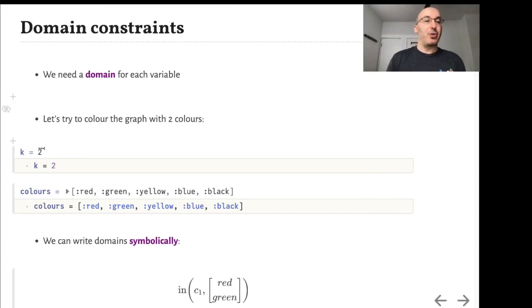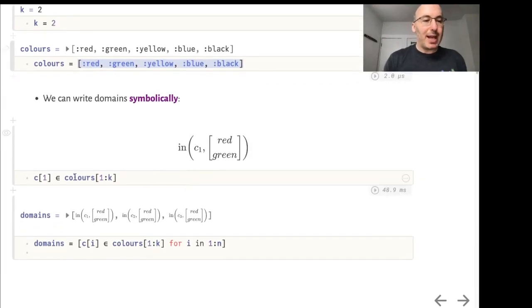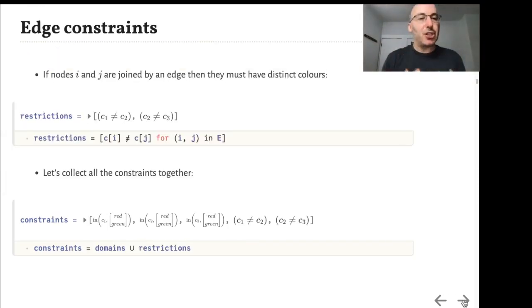Let's try to color the graph with two colors. k is the number of colors and here is a list of colors to choose from. We can write domains symbolically using the symbolics.jl package. Here's a symbolic expression that c1 is in the set red, green. Then we need constraints that vertices joined by an edge cannot be the same color. So ci is not equal to cj when i and j belong in an edge.